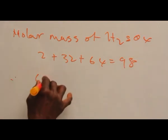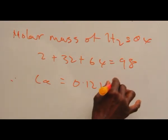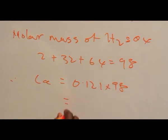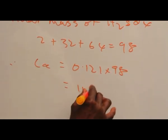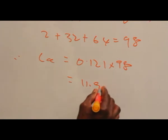So therefore CA equals 0.121 multiplied by 98, that is 11.9 grams per dm³.